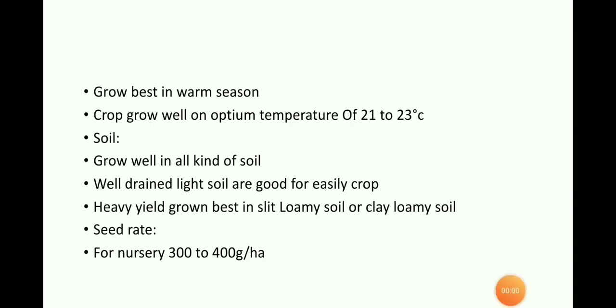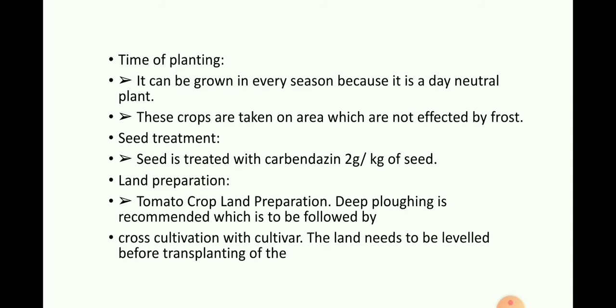Climate: Tomato is a day-neutral plant and grows best in a warm season. The crop grows well at an optimum temperature of 21 to 23 degrees Celsius. Soil: Grows well in all kinds of soil; well-drained light soils are good for an early crop; heavy yield is best achieved in silt loamy or clay loamy soil. Seed rate for nursery: 300 to 400 grams per hectare. Time of planting: It can be grown in every season as it is a day-neutral plant. These crops are taken in areas not affected by frost.